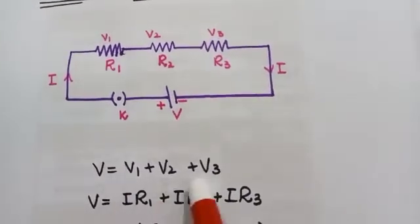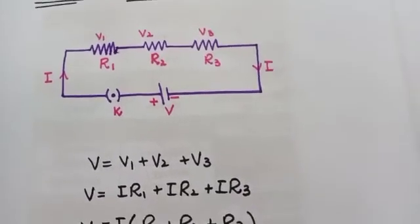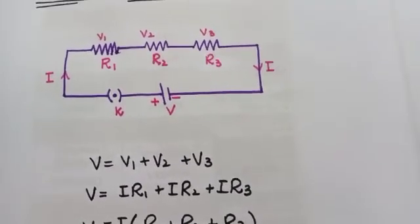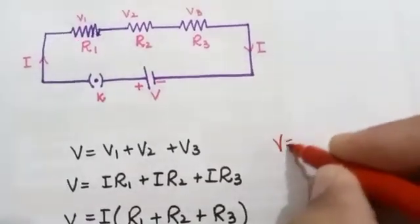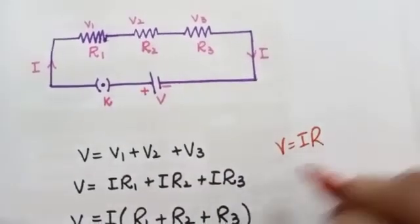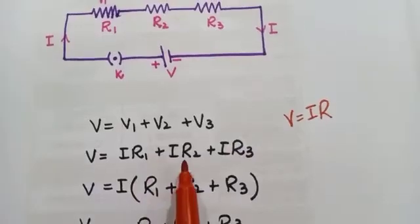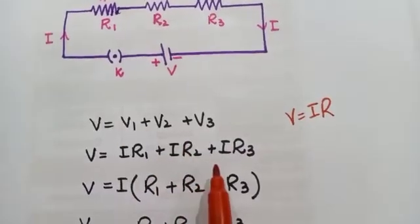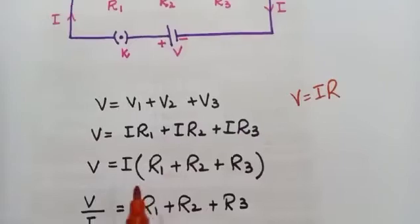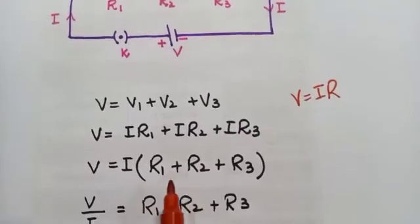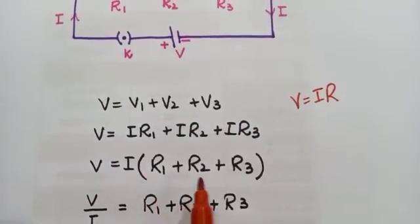We can write it as V = V1 + V2 + V3. From Ohm's law, V = IR. From this we can write V1 = IR1, V2 = IR2, and V3 = IR3.